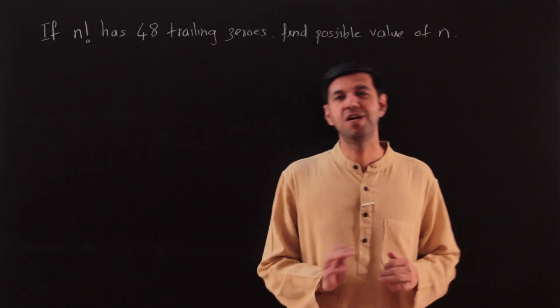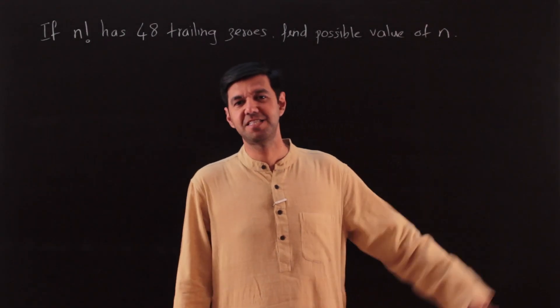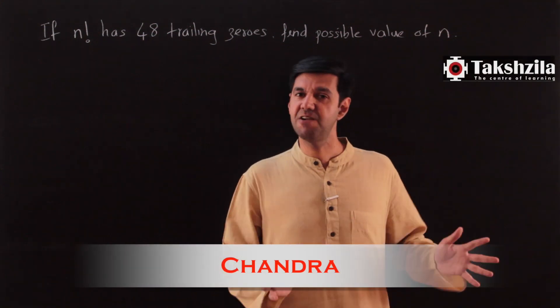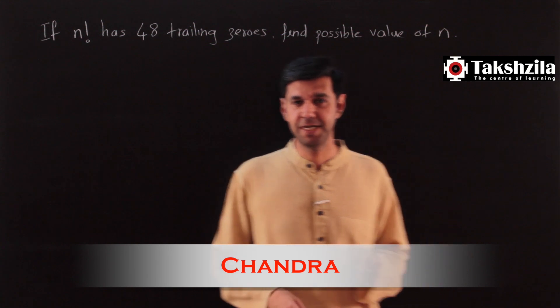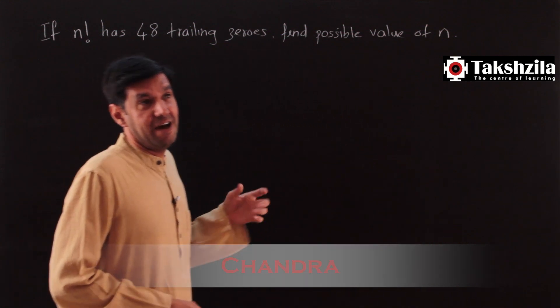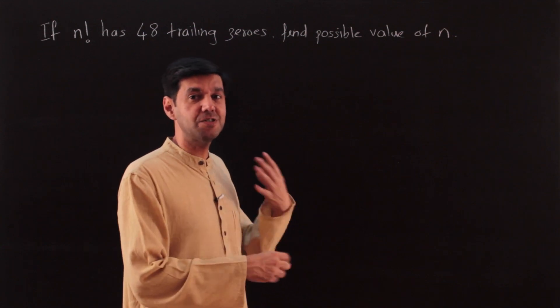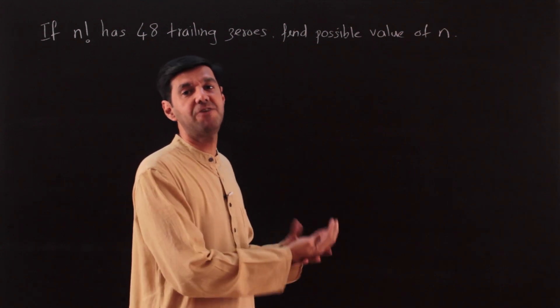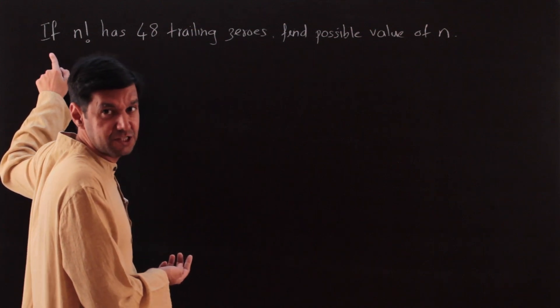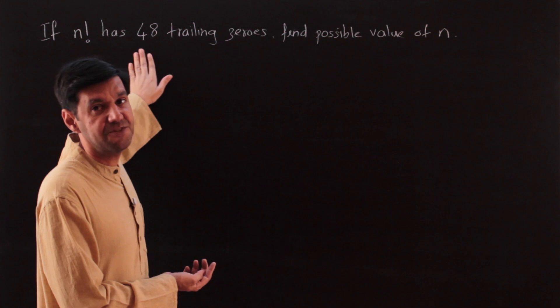Had the questions been only about finding the number of trailing zeros in a factorial, we would not have a separate lesson for this. It could have easily been done in the previous lesson itself. But with trailing zeros, there can be some tougher questions as well.